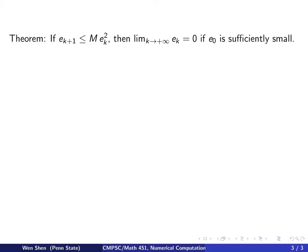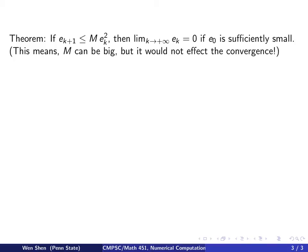We have this theorem: if you have this error estimate e_{k+1} ≤ M·e_k², then the error goes to 0 if the initial guess is sufficiently close — that is, if e_0 is sufficiently small. The constant M can be large; as long as e_0 is sufficiently small, no matter how big M is, we still have convergence. This is very different from regular fixed point iteration with linear convergence, where the constant m must be less than 1.